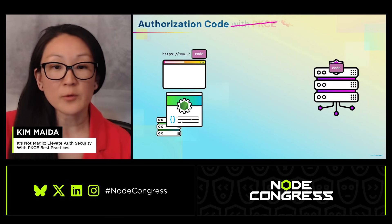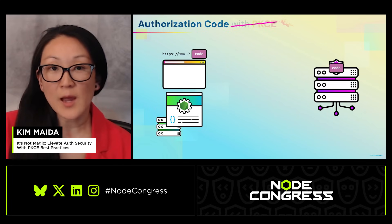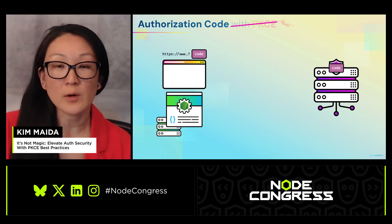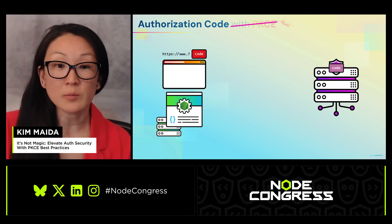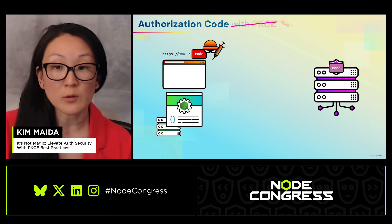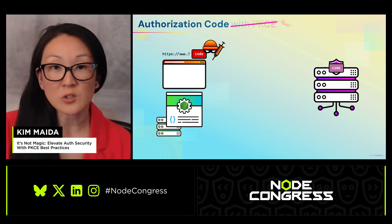In the normal authorization code flow without PKCE, there is no code verifier. At this point, the app would exchange the code for tokens that identify the user or grant access to resources. However, because this code is exposed in the browser, an attacker could potentially steal it and attempt to exchange it for the user's tokens by injecting it into their own session. This is called authorization code injection.